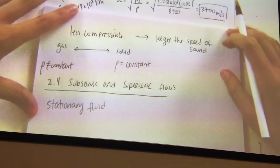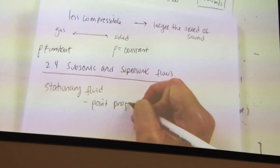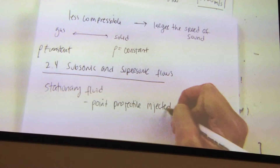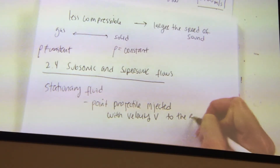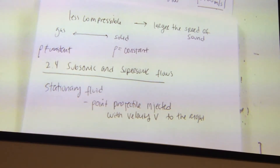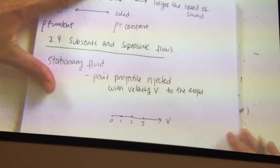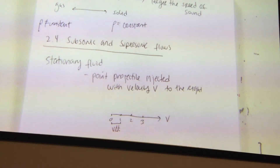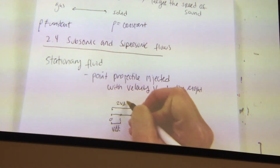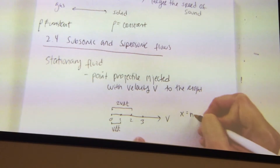So let's imagine we have a stationary fluid, and into that fluid we inject a point projectile moving at a certain velocity V to the right. At particular time intervals — 0, 1, 2, 3 — it's going to move different distances. The distance between 0 and 1 would be V times delta T, between 1 and 2 it would be 2V delta T. The distance is just the interval number times V times delta T.